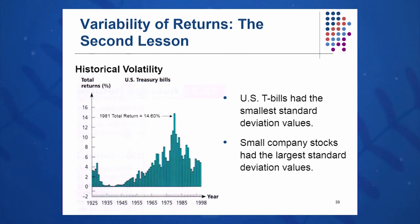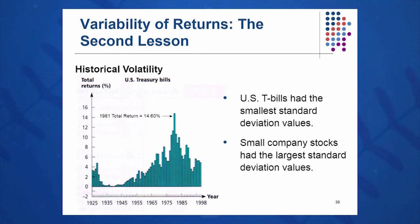We can see on this chart that T-bills don't vary very much. They vary somewhere between 0 and 14.6 percent over time and never go below the line negatively. They have the smallest standard deviation and the smallest variance of all the instruments that Ibbotson and Sinkfeld studied.